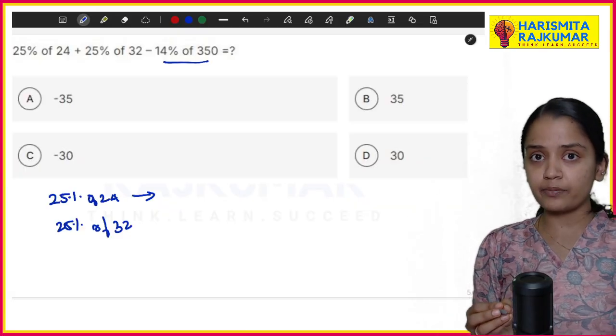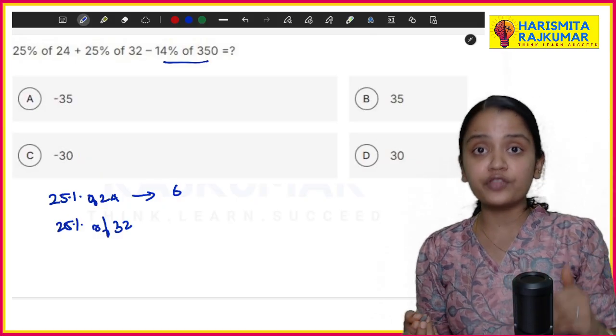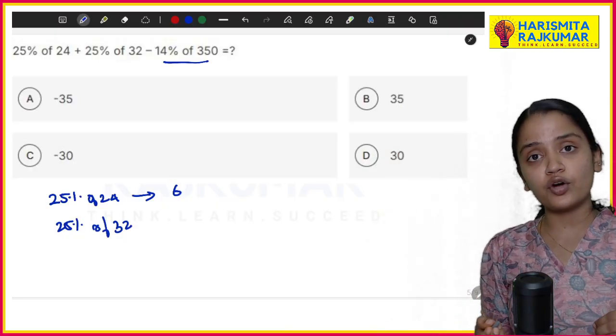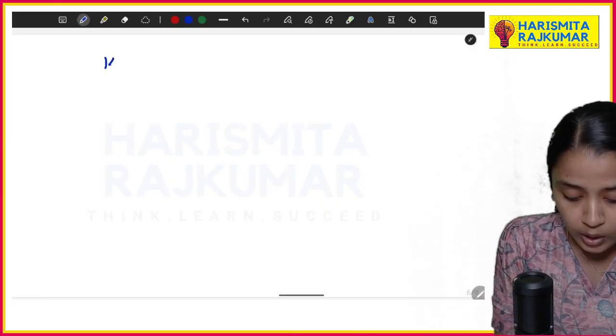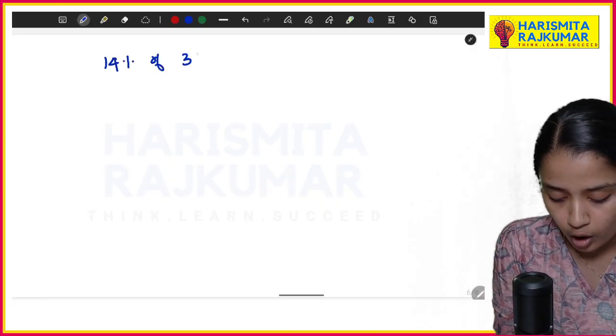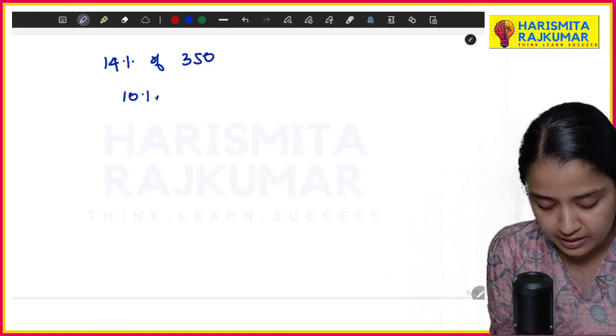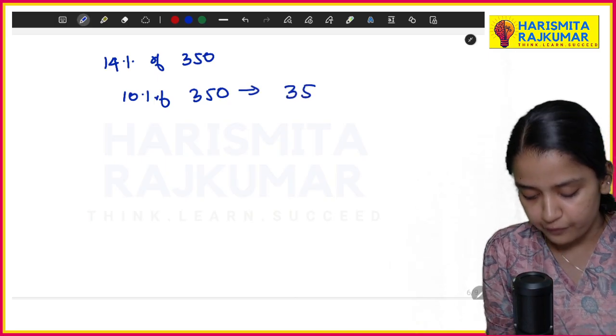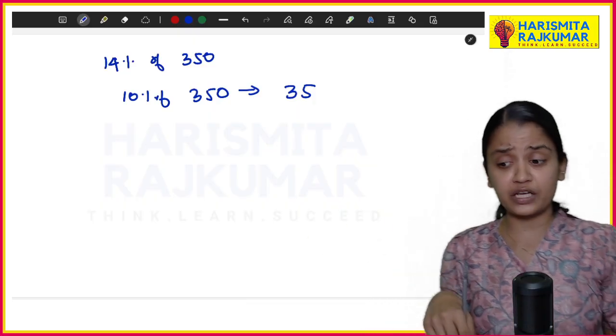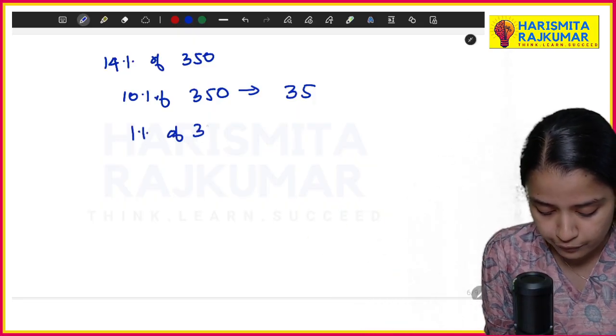Then again 25% of 32, 32 divided by 4, I'm getting 8. Now 14% of 350, for finding 14% of 350, what is 10% of 350? Which is nothing but 35.